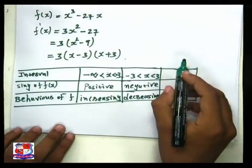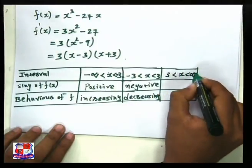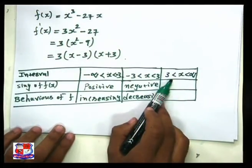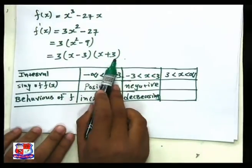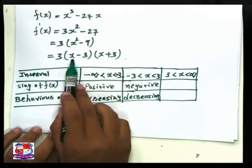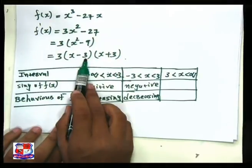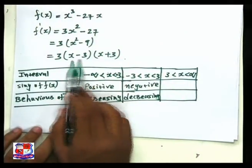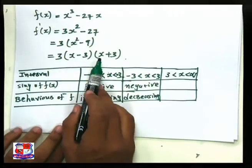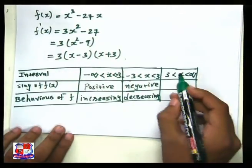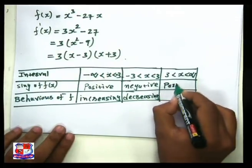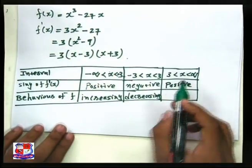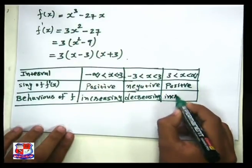When x is greater than 3, both x + 3 and x − 3 are greater than 0. So both factors are positive, and positive times positive is also positive. Therefore the sign of f′(x) is positive, and the behavior of f is increasing on (3, ∞).